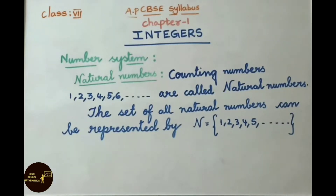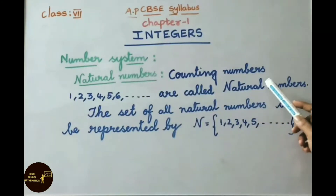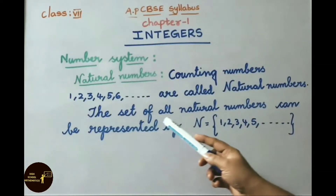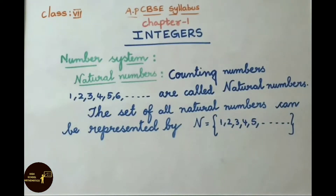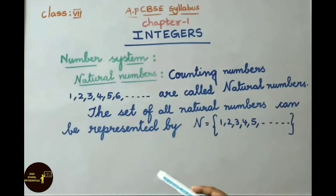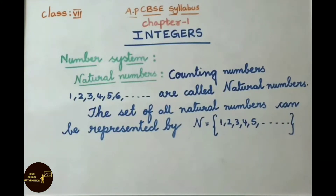Before going to the exercise, let us see what is the number system. Natural numbers are counting numbers such as 1, 2, 3, and so on. The set of all natural numbers can be represented by the capital letter N, that equals the set {1, 2, 3, 4, 5, ...}.